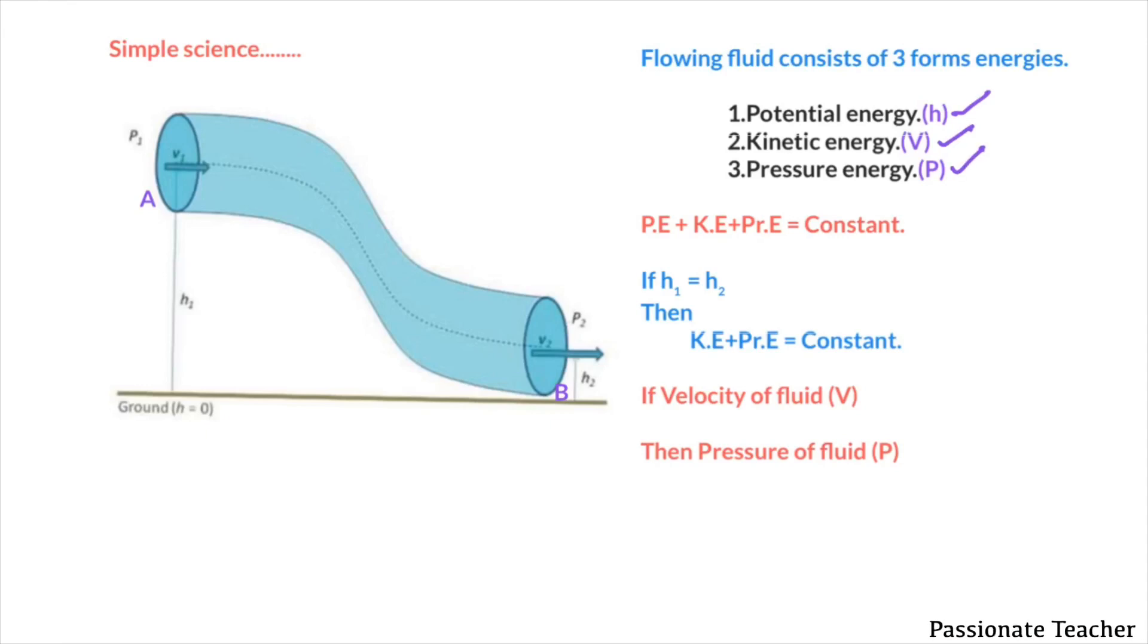This means if the fluid is flowing, then sum of potential energy and kinetic energy and pressure energy should be constant. That means energy should be conserved. Now suppose if h1 is equal to h2, then point A and point B both will be at the same height, then potential energy at A and B both will be same.